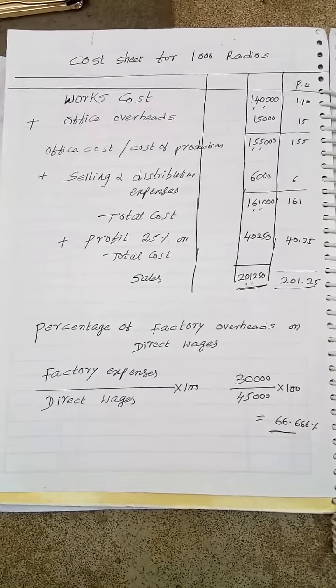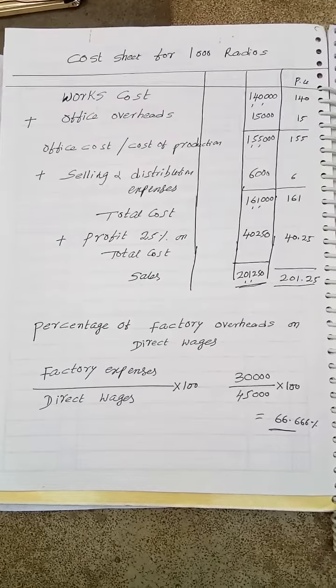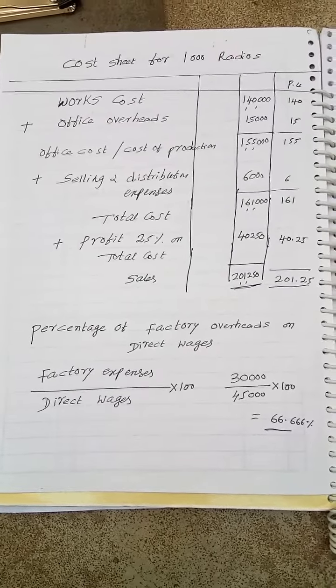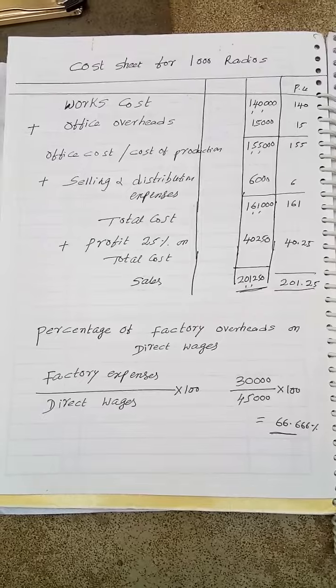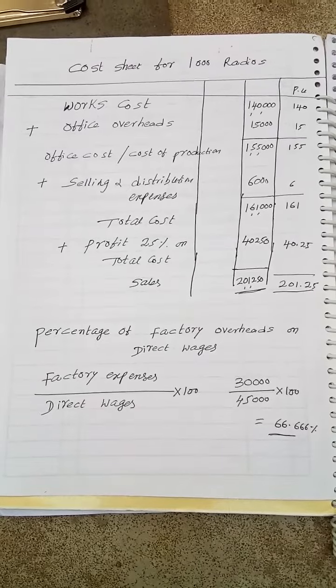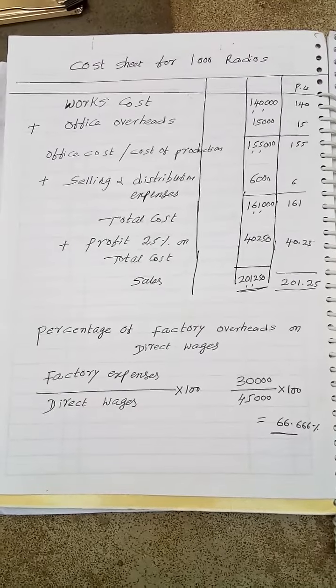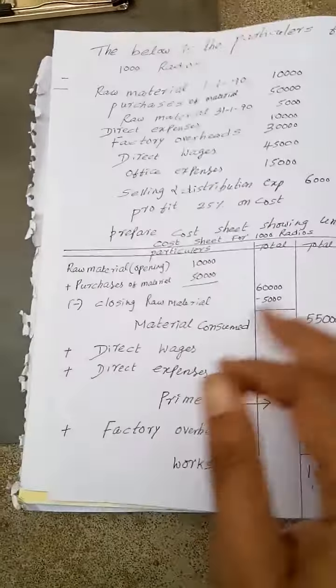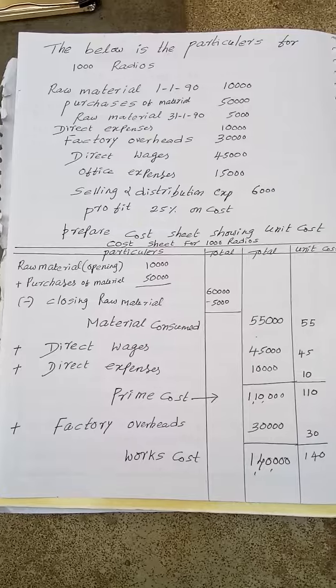This is tender and quotation. Here in cost accounting, we can show the particulars for unit cost also. This is cost sheet.